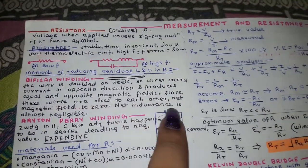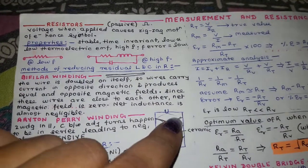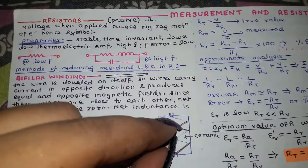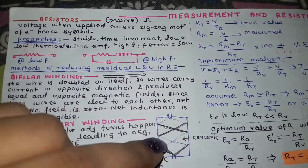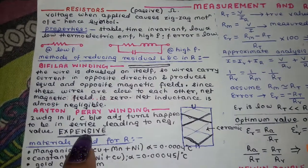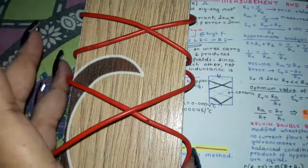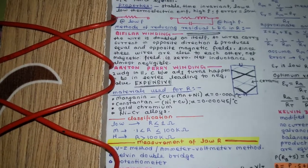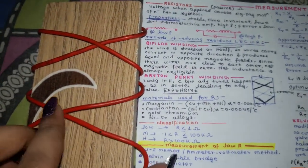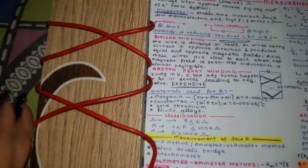In the Ayrton-Perry winding, a ceramic former is used and two wires are wound on it. Two adjacent turns have some capacitance between them, but since these capacitances fall in series, the effect is almost negligible. However, this method is quite expensive. Two sets of windings are wound on the ceramic piece to reduce the capacitive effect.